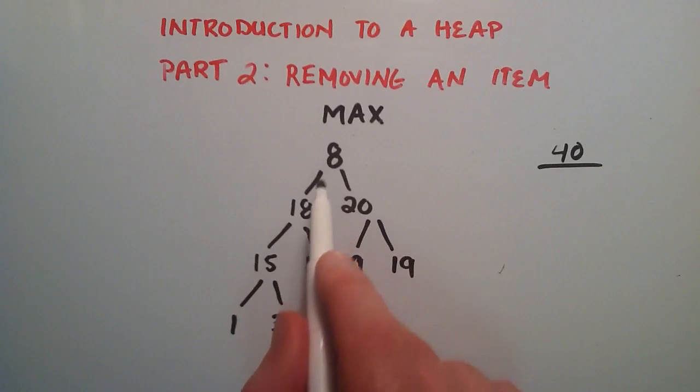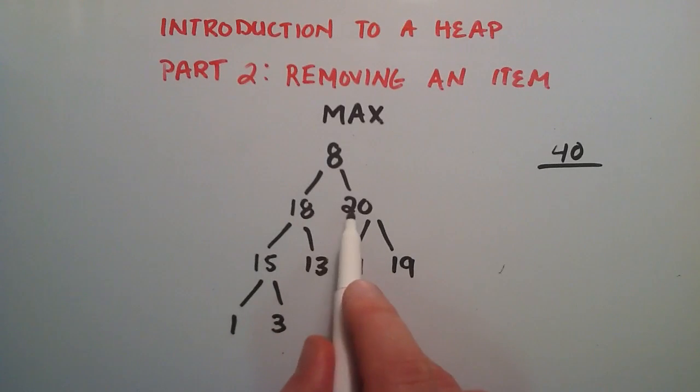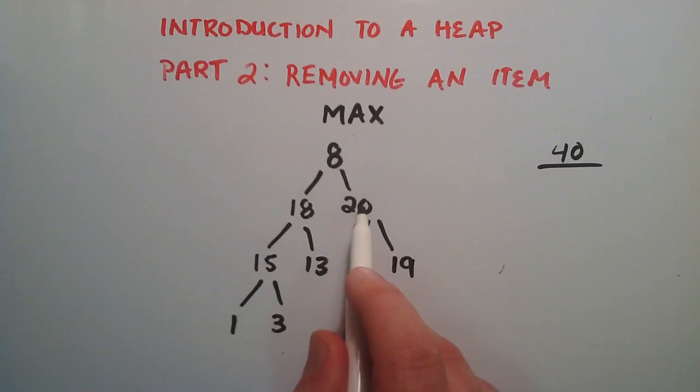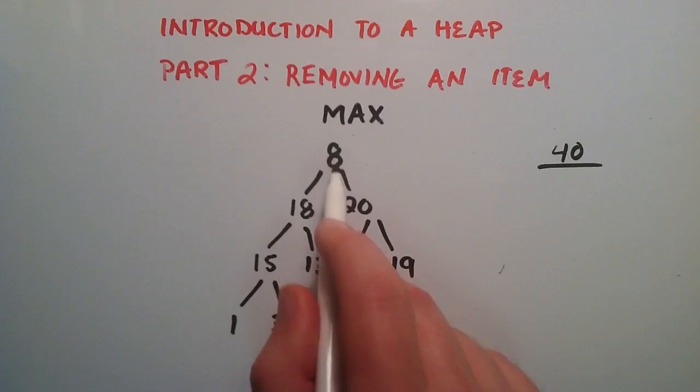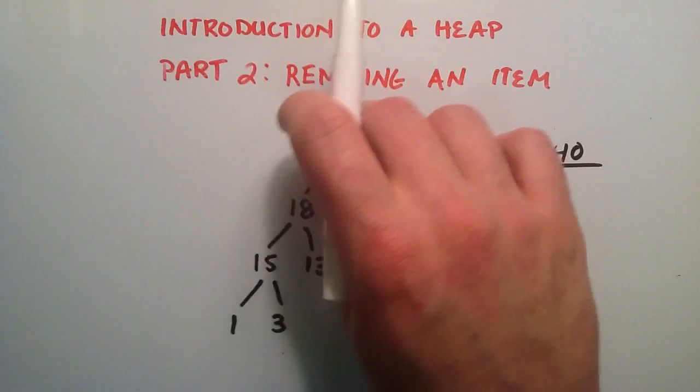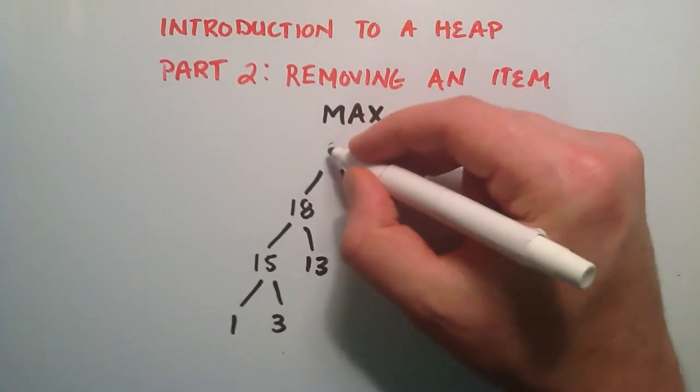we basically look at the two children of the root here, and we compare the two, and we figure out which one is the biggest. So it turns out 20 is bigger than 18. Now that we have that established, we compare 20 with the value 8, and if 20 is bigger than 8, then we simply switch the two numbers. The child is bigger than the parent, then we switch them. So we're just going to put 20 where 8 is, and 8 where 20 is.